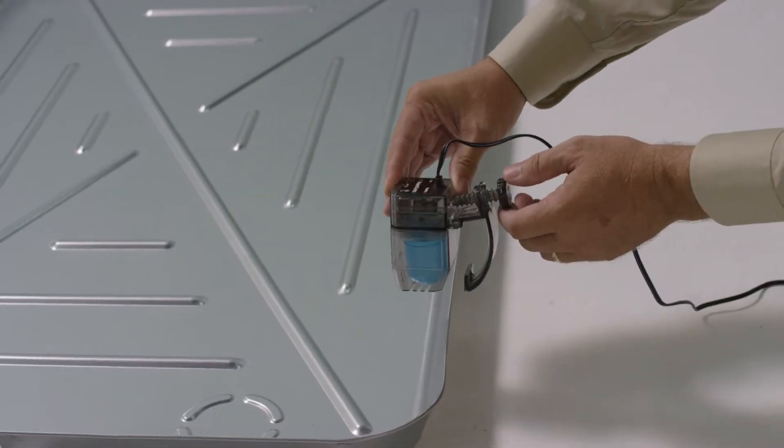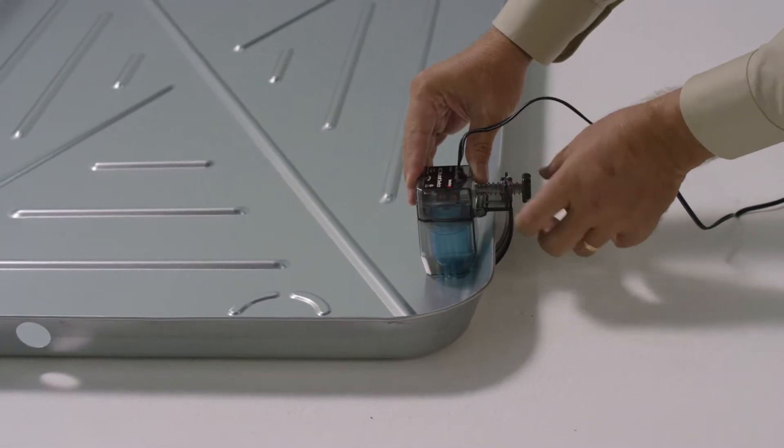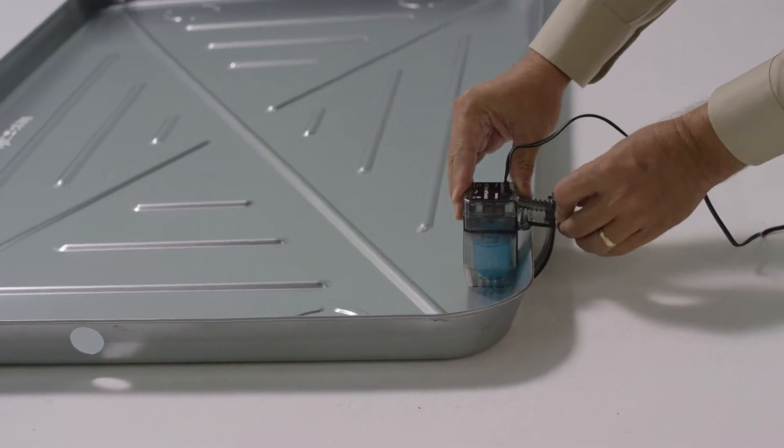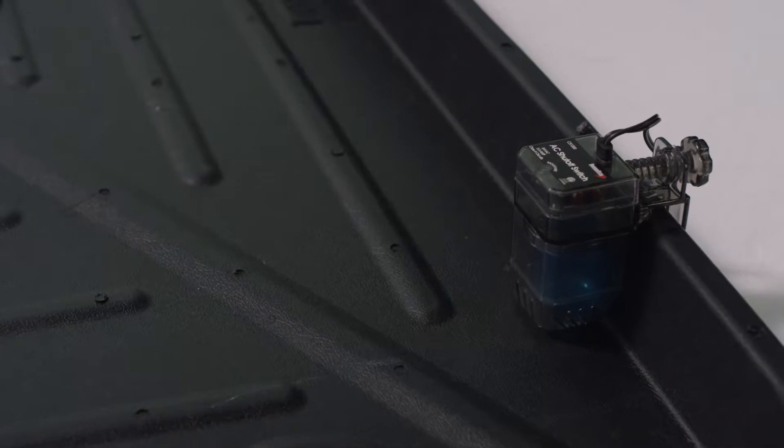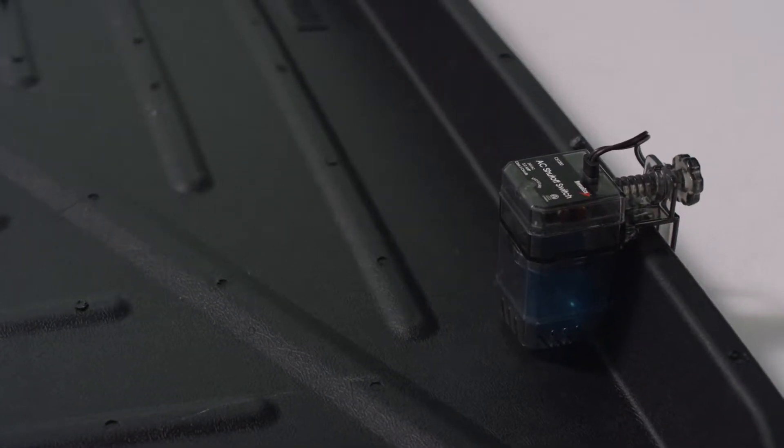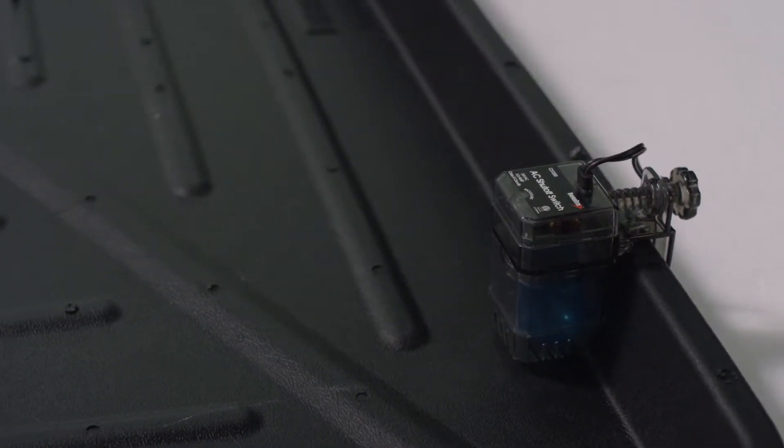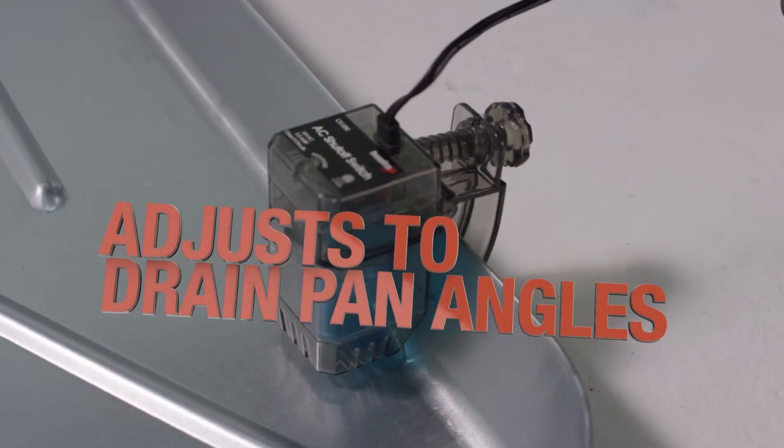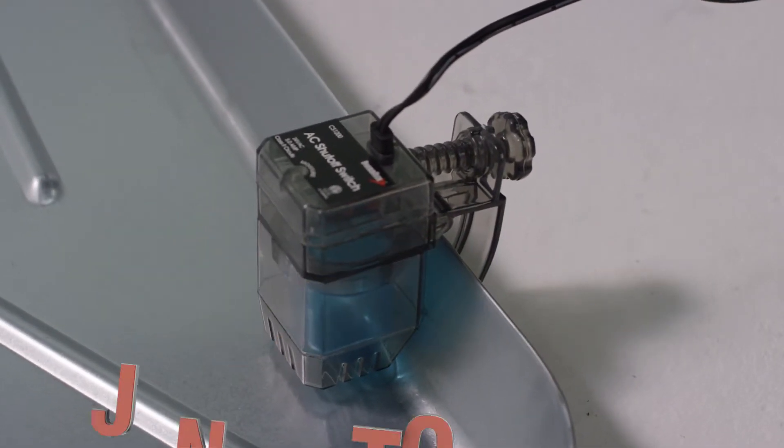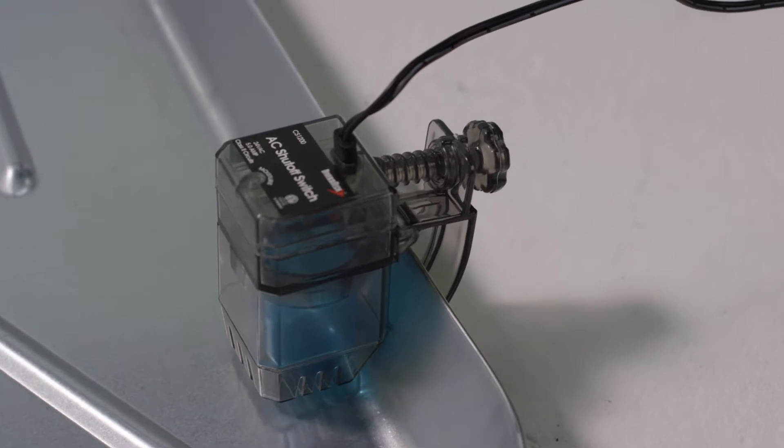The CS1200 clips onto any pan size with a unique universal pan mount to ensure accurate detection in both metal or plastic secondary drain pans. It's the only water detection switch that adjusts to drain pan angles as the switch keeps the float perpendicular to the water and in the perfect detection position.